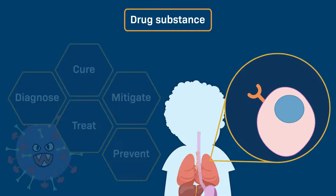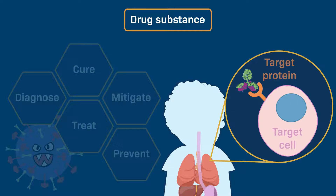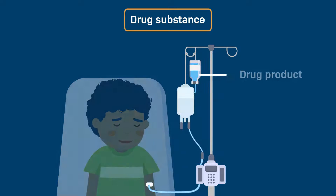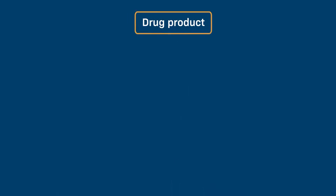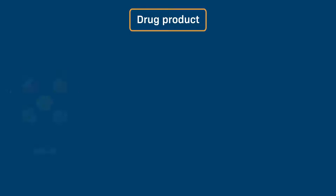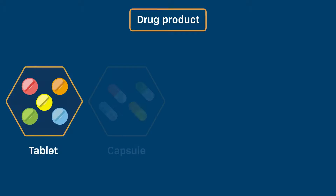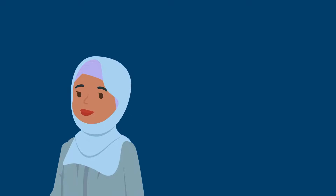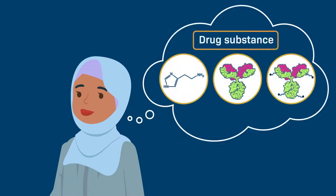Drug substances are used to cure, mitigate, treat, prevent, or diagnose a disease, or to affect the structure or function of a specific target in the body. A drug substance is carried into the body by a drug product. A drug product is a dosage form such as a tablet, capsule, syrup, or solution. Now that we know what a drug substance is, let's find out how one is made.